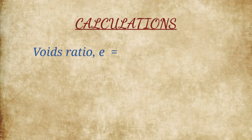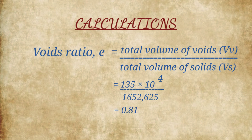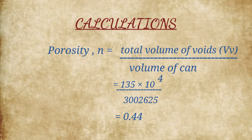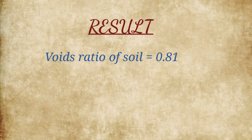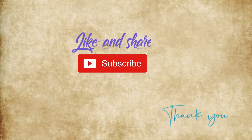Calculation: Voids ratio E = total volume of voids divided by volume of solids = 0.44. For better accuracy, the test is repeated for the same soil. I hope you all understand this experiment. Next time we will be back with another experiment. Thank you.